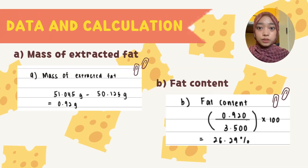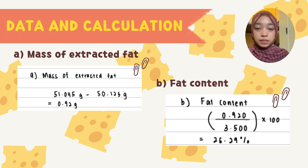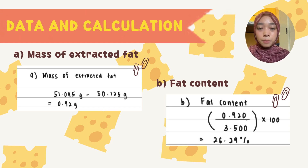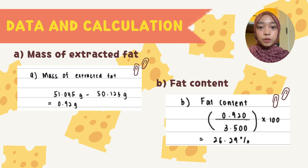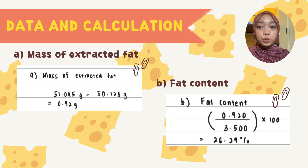For the data and calculations, first we have to find the mass of the extracted fat. We can find the mass of extracted fat by subtracting the weight of the empty flask from the weight of the flask and fat: 51.045 grams minus 50.125 grams equals 0.92 grams. Next, the percentage of fat content can be determined by dividing the mass of extracted fat by the mass of the sample and multiplying by 100: 0.92 grams divided by 3.5 grams, times 100. So the fat content is 26.29%.